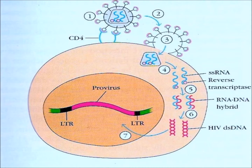HIV RNA, reverse transcriptase, integrase, and other viral proteins enter the host cell. Viral DNA is formed by reverse transcription. Viral DNA is then transported across the nucleus and integrates into the host DNA.